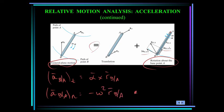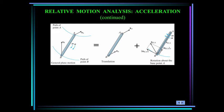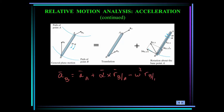Now this normal component is not a cross product, but it's in the direction of R of B with respect to A. Combining all of that, we can write that the acceleration of B is equal to the acceleration of A plus alpha cross R_B/A minus omega squared times R of B with respect to A. This is the equation we'll use.